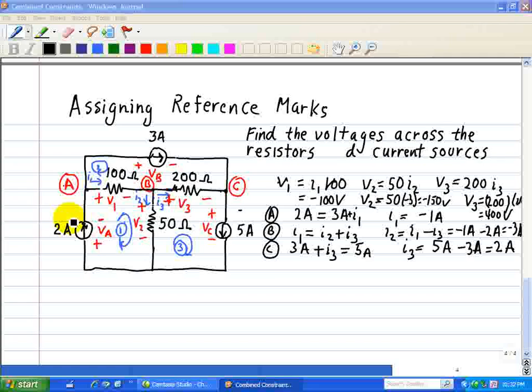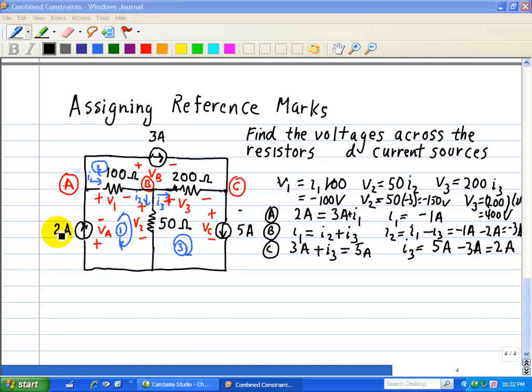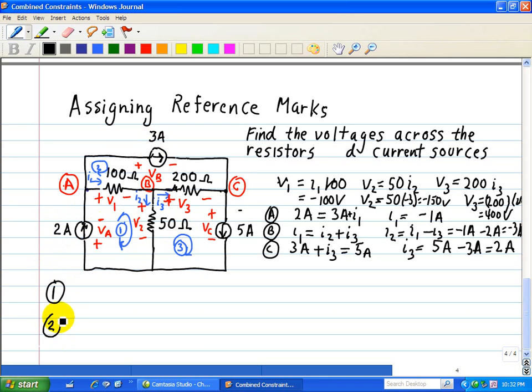Next, we need to find the voltage across current sources VA, VB, and VC. So we'll write loop equations. For loop 1, we have the following KVL, and we'll start right here.